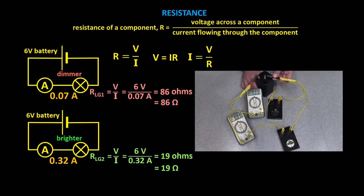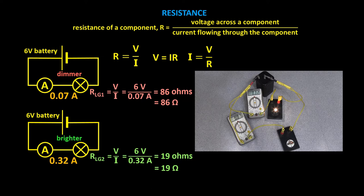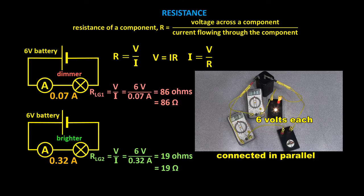Of course, I didn't really need to film the light globes separately. Remember, two light globes, or anything connected in parallel to a 6-volt battery, both get 6 volts across them each. Just as all the lights in your house, which are all connected in parallel, get 240 volts each.